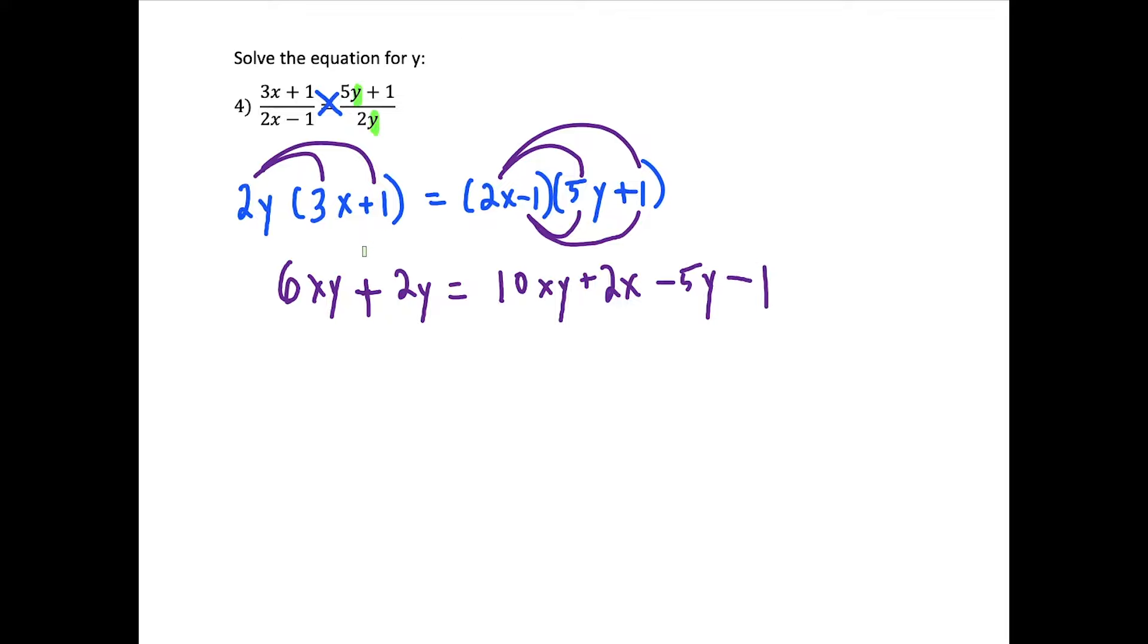So if we look at this step, now we have to look for where are all the y terms. And this counts as a y term. 6xy has a y attached to it. So that's something that we need to focus on. So these four terms here, 6xy, 2y, 10xy, and minus 5y all belong on one side of the equation together. And everything else belongs on the other side.